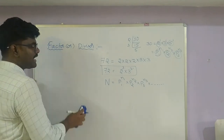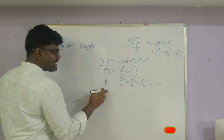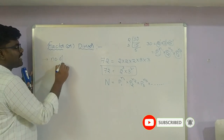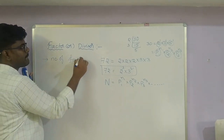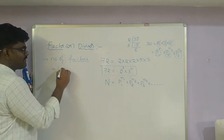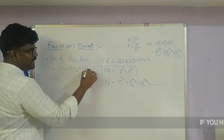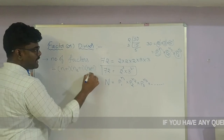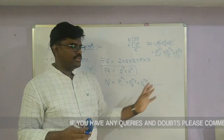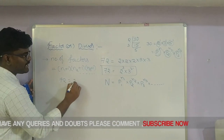If the number N is given in prime factorization form, then the number of factors formula is: (n1 + 1) × (n2 + 1) × (n3 + 1) × ... and so on, up to however many prime factors there are. For example, we want to find how many factors 72 has. 72 is written as 2³ × 3².